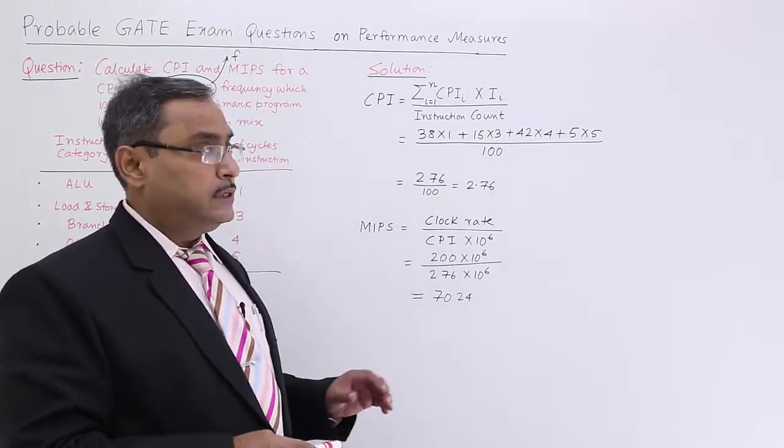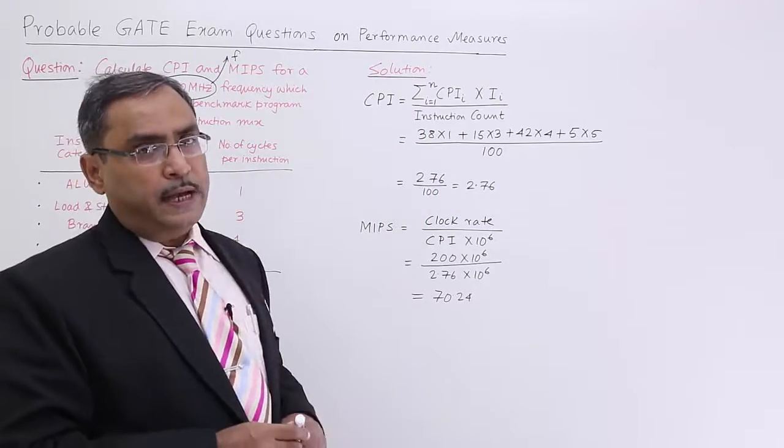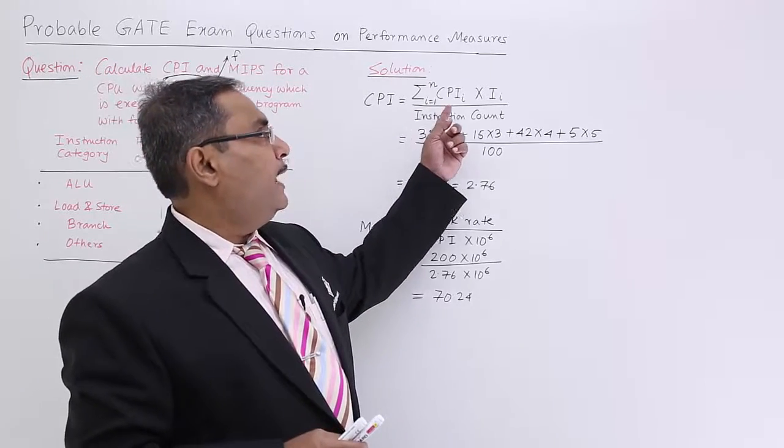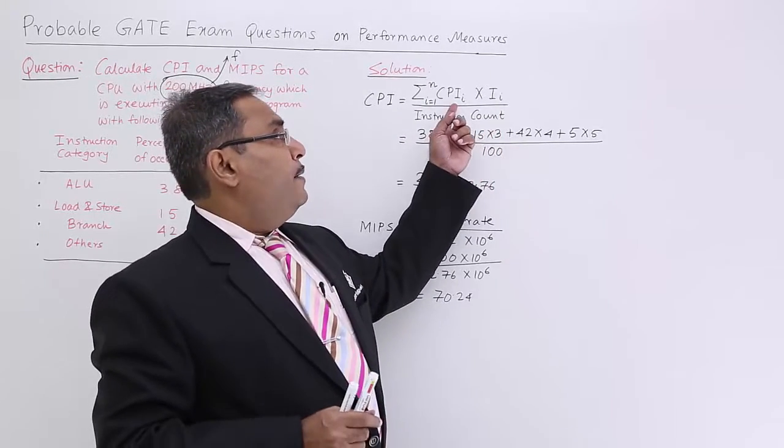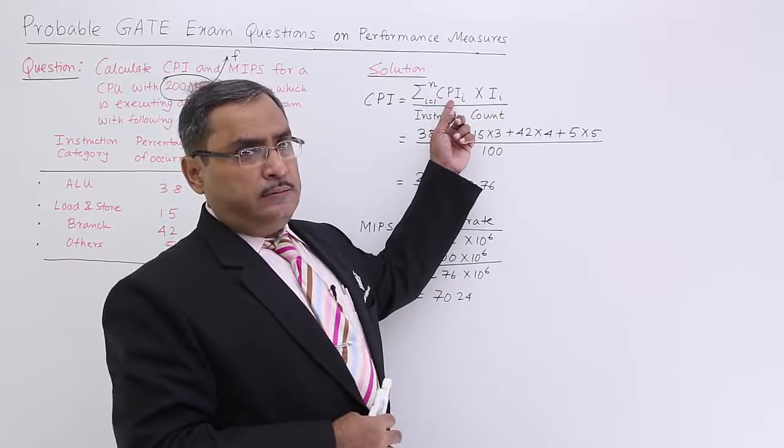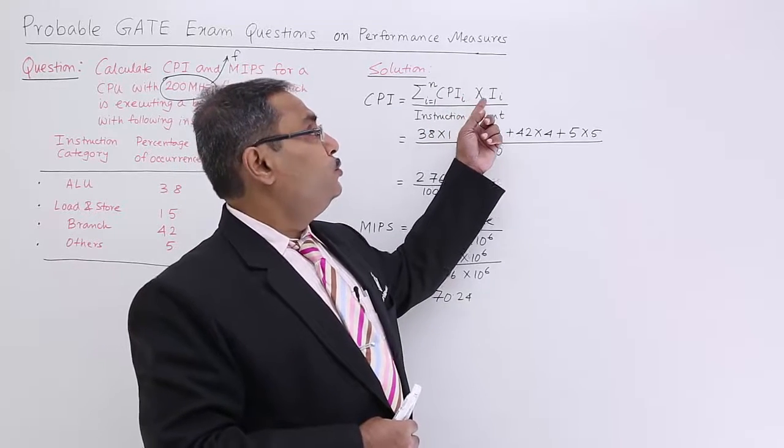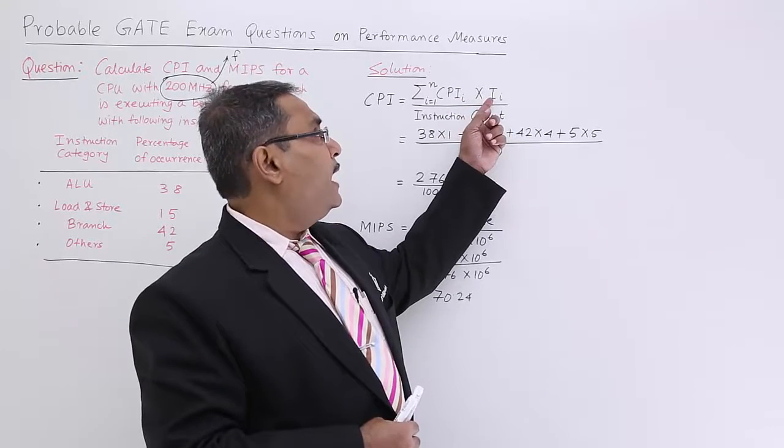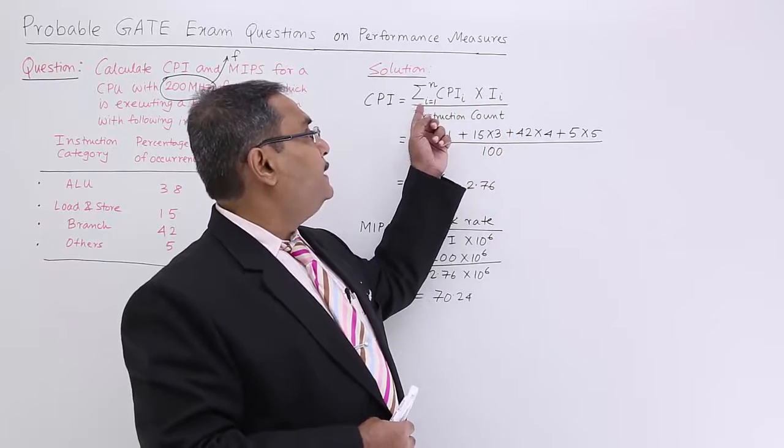Let me go for the solution. At first I am going to calculate the CPI. In that video we discussed that the CPI will have the formula like this: per instruction CPI into the instruction count, summed for i equals 1 to n.